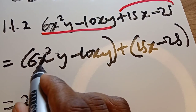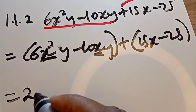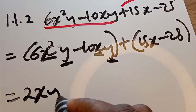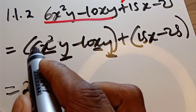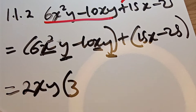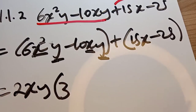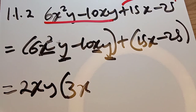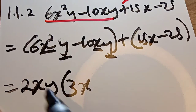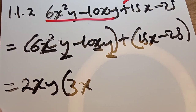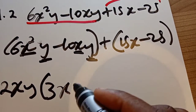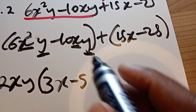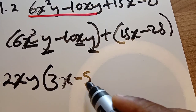So 2 goes into both terms as a common factor. We also have x in both terms and y in both terms, so they are also common factors. 6 divided by 2 gives 3, and we took out 2, x, and y. For the second term, 10 divided by 2 gives 5 — we took x and y out, leaving negative 5. So 2xy multiplied by negative 5 gives negative 10xy.